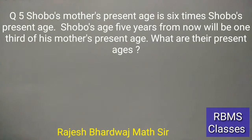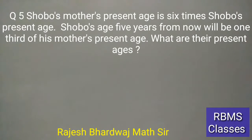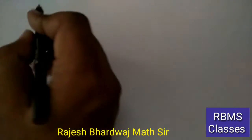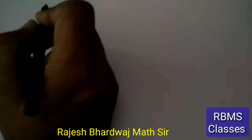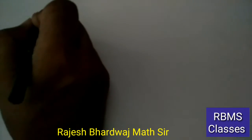आगे next question — question 5: Sobo's mother's present age is six times Sobo's present age. Sobo's age five years from now will be one third of his mother's present age. What are their present ages? तो बच्चों हमने दोनों की present ages बतानी हैं।